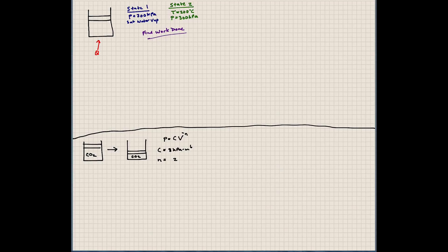For the top problem we have a cylinder full of saturated water vapor, and the pressure in this piston cylinder is 300 kilopascals. If we heat it, we know the temperature will increase up to 200 degrees Celsius, and what we're asked to do is find the work done.